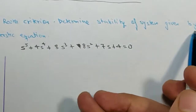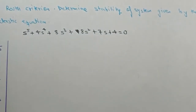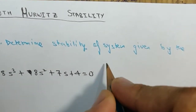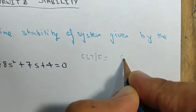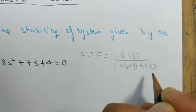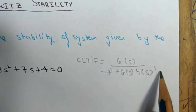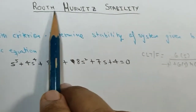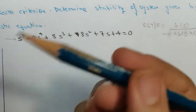The question is: using Routh-Hurwitz criterion, determine the stability of the system given by the characteristic equation. The characteristic equation comes from the denominator of the closed loop transfer function G(s) / (1 + G(s)H(s)) when equated to zero. Whenever you are using Routh criteria you always need to look at the characteristic equation — here it is already given, so we will directly proceed.